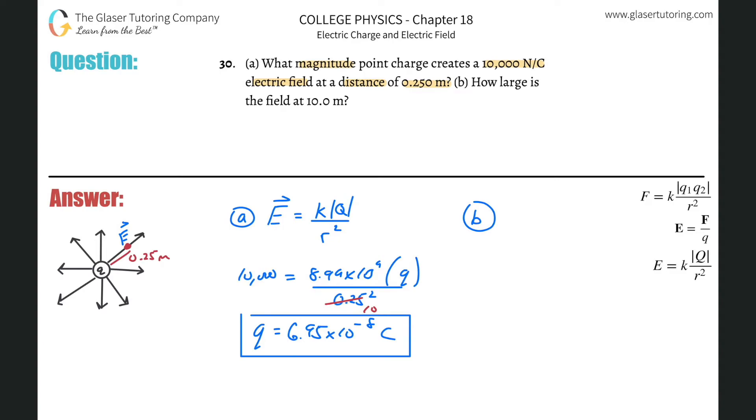So just do the same math again, just with the 10 down there. So this is going to be 10,000, multiplied by then 10 squared, divided then by 8.99 times 10 to the ninth. And what do we get? We get now Q equals, oh no, how large is the field? I'm sorry.